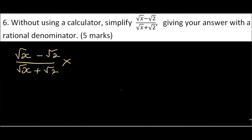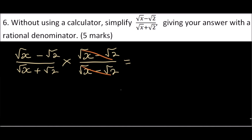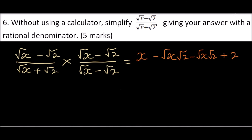We multiply by (√x − √2) / (√x − √2). The conjugate of the denominator has the opposite sign — since the denominator has a positive, the conjugate uses a negative. Multiplying by this form equals multiplying by one, so the expression is unchanged. Expanding the numerator: √x × √x = x, √x × (−√2) = −√(2x), (−√2) × √x = −√(2x), and (−√2) × (−√2) = +2.